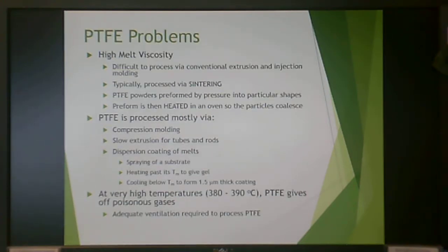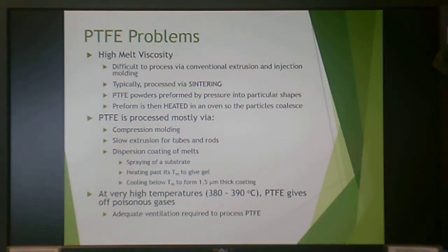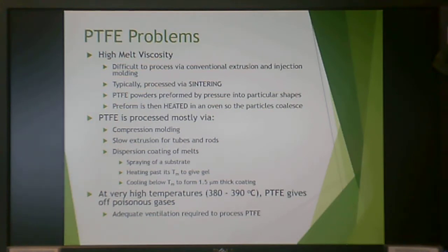However, there are problems. Due to its strong carbon-fluorine bonds and high crystallinity, PTFE has a very high melt viscosity and is extremely difficult to process with conventional thermoplastic methods — conventional extrusion and injection molding are essentially out. It is typically processed via sintering: Teflon powder is preformed into a shape, heated to form an amorphous gel, and cooled to coalesce. Processing is mainly by compression molding and very slow extrusion for tubes and rods. Coatings are done by dispersion coating — spraying powder onto a substrate, heating past TM, then cooling to give roughly a 1.5-micron-thick coating, as with cookware.